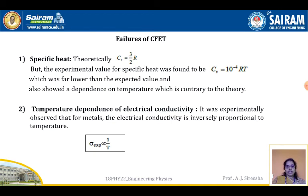The first failure is that specific heat cannot be explained properly. Theoretically, the specific heat at constant volume Cv = (3/2)R as per CFET, but the experimentally found value is Cv = 10⁻⁴. The theoretical value is very different from the practical value, and there is a temperature dependence in the experimental value that could not be explained theoretically. So specific heat is a great failure of CFET.